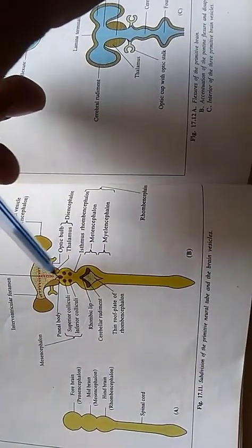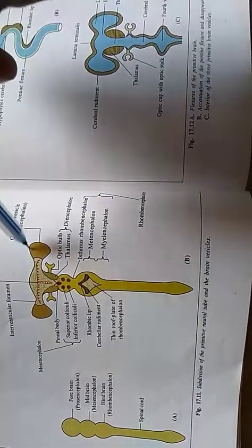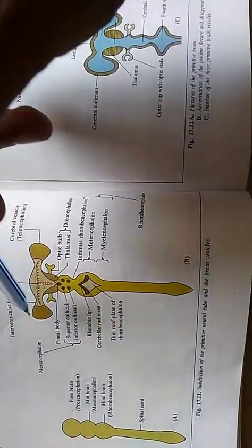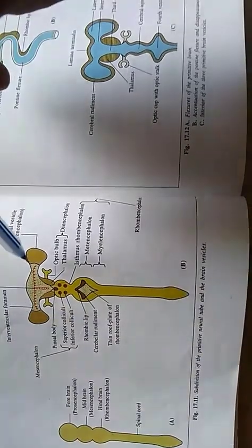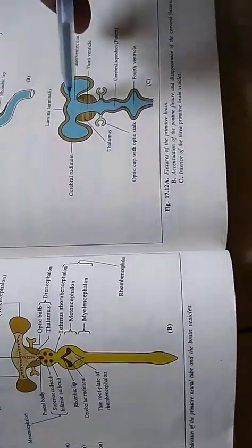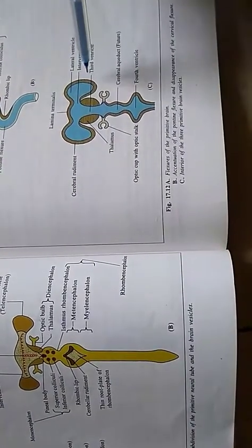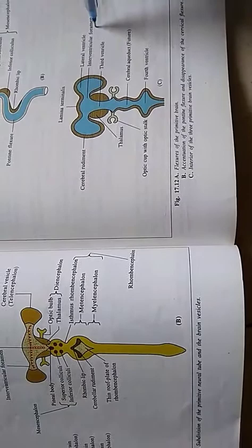The cavity of forebrain vesicle will persist as the third ventricle of brain. The cavity of the cerebral hemispheres will form the lateral ventricles. And the point of commencement of the cerebral diverticula will form the interventricular foramen of Monroe.